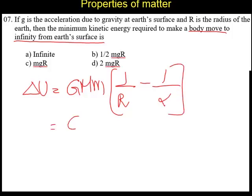So it is simply GmM by R. This is the potential energy. They are asking for minimum kinetic energy.